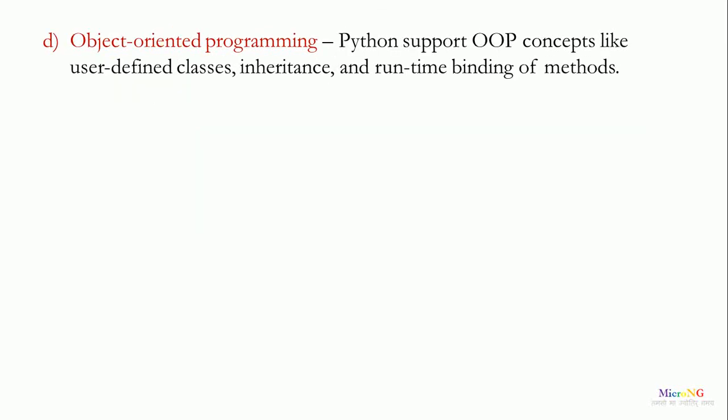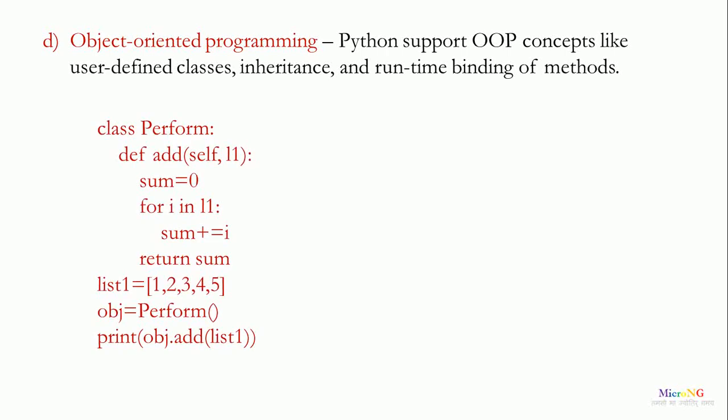Object-oriented programming style. Python support OOP concept like user-defined classes, inheritance and runtime binding of methods. Let's see the example for adding the elements of a list by using a class. We created a class named perform. Inside the perform class, a method is defined. The name of the method is add. It takes a parameter as a list. Inside the add method, we have written the logic for finding the sum of the elements of the list and the sum will be returned.